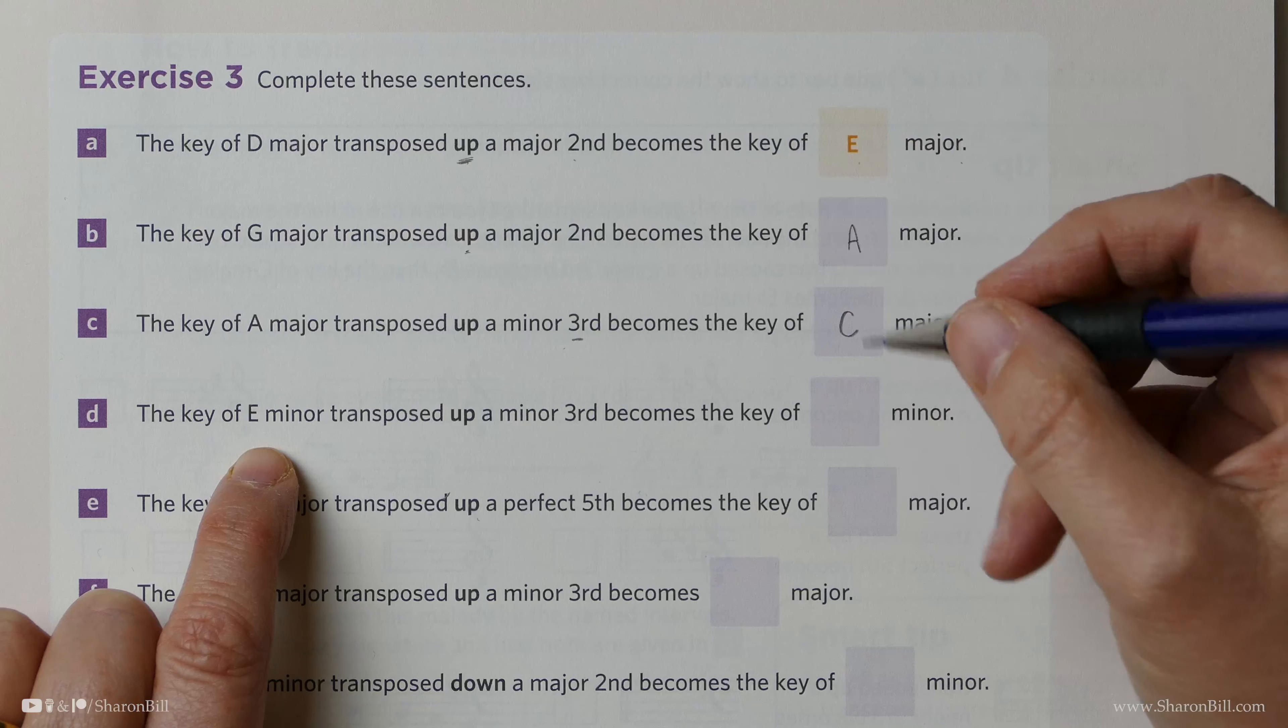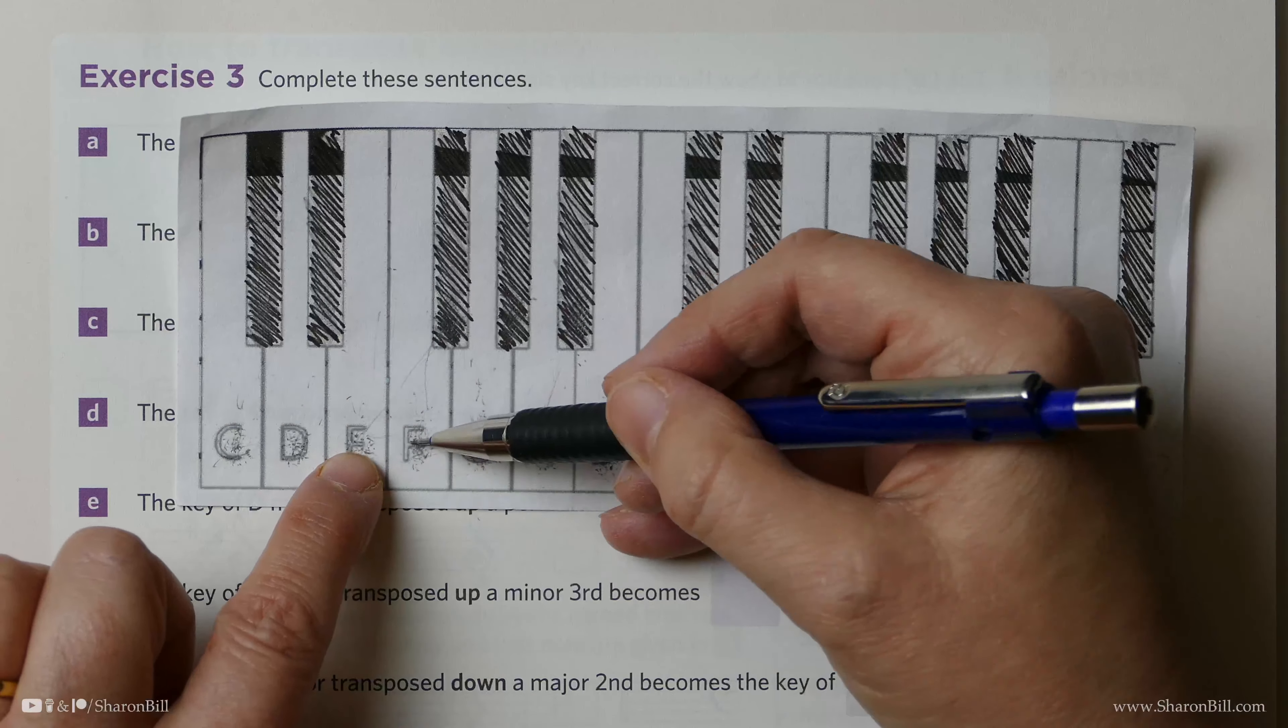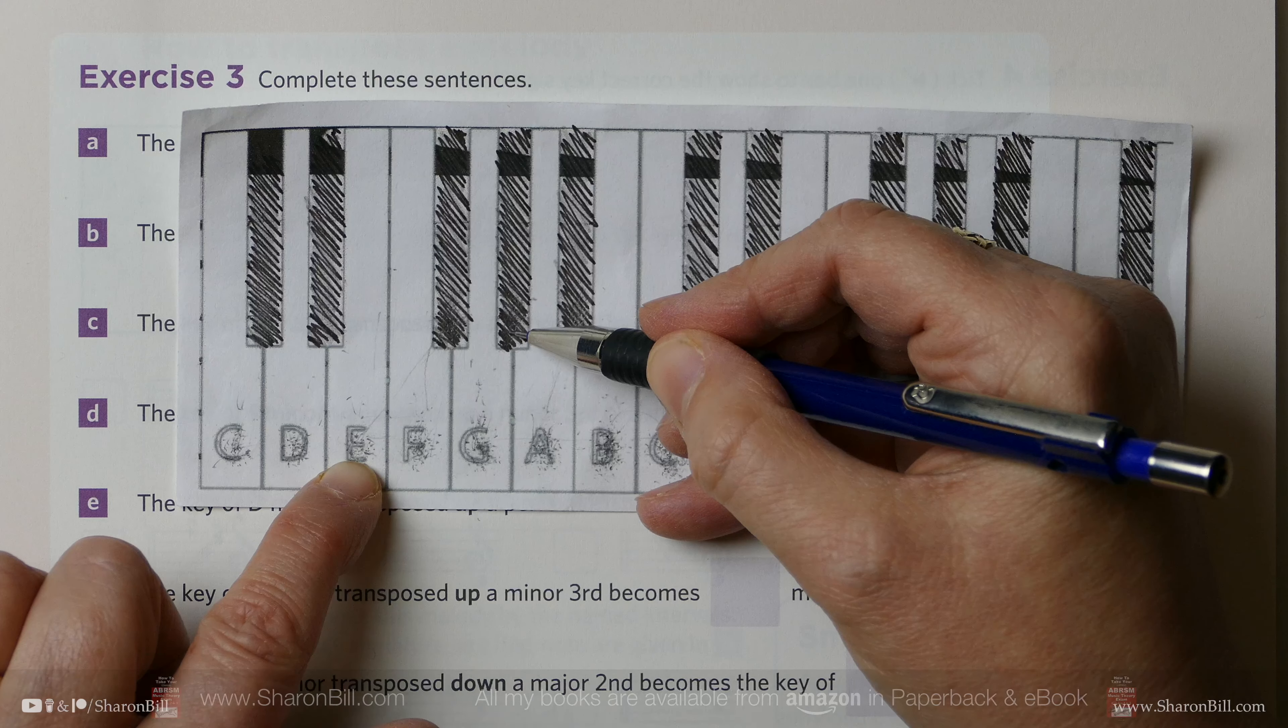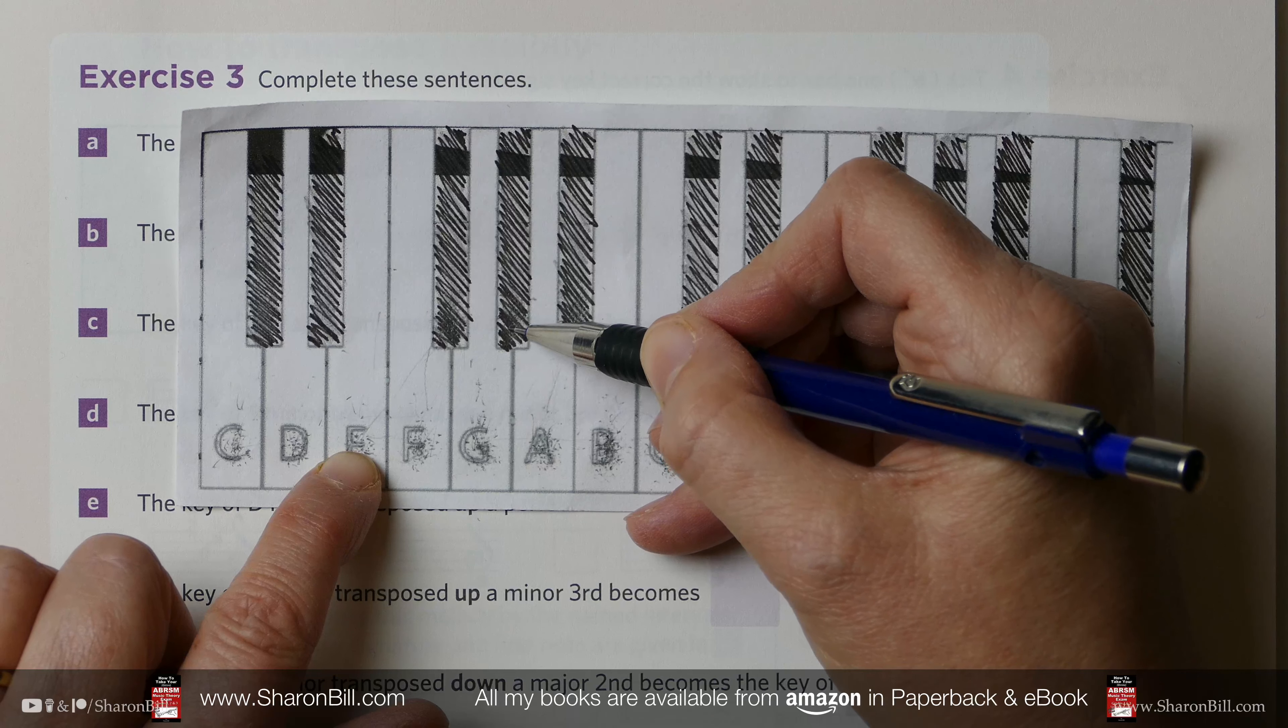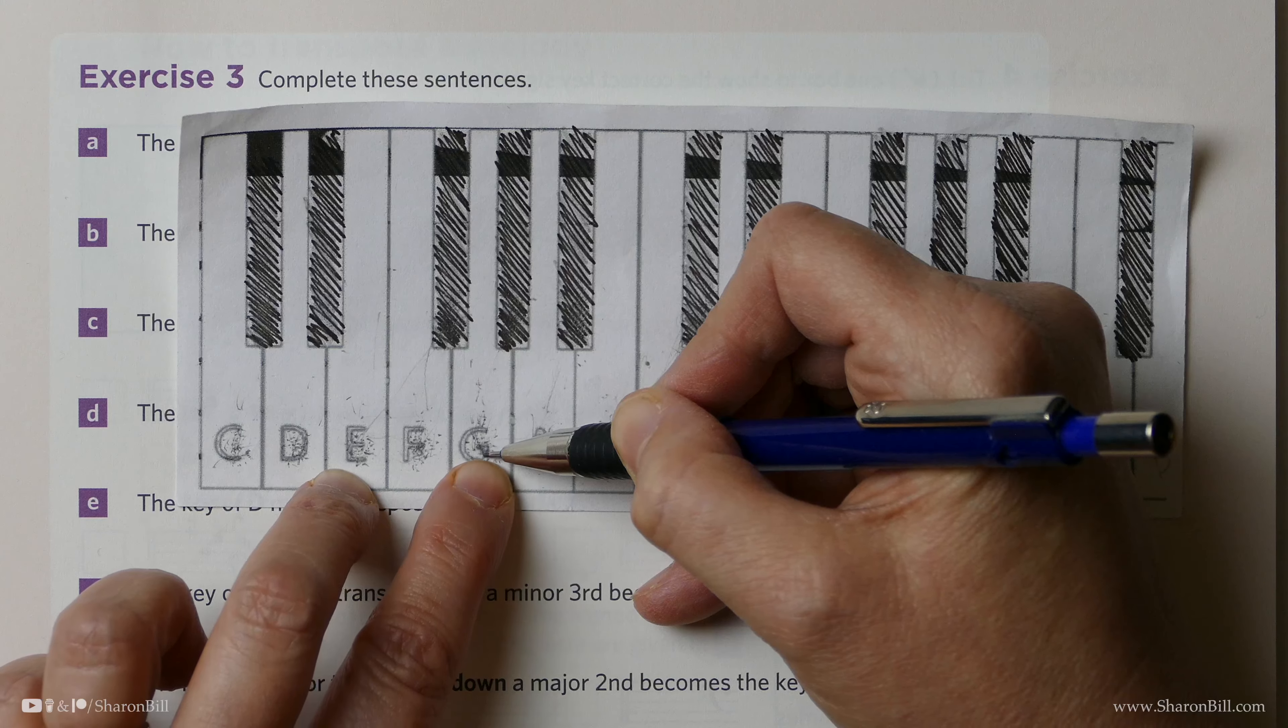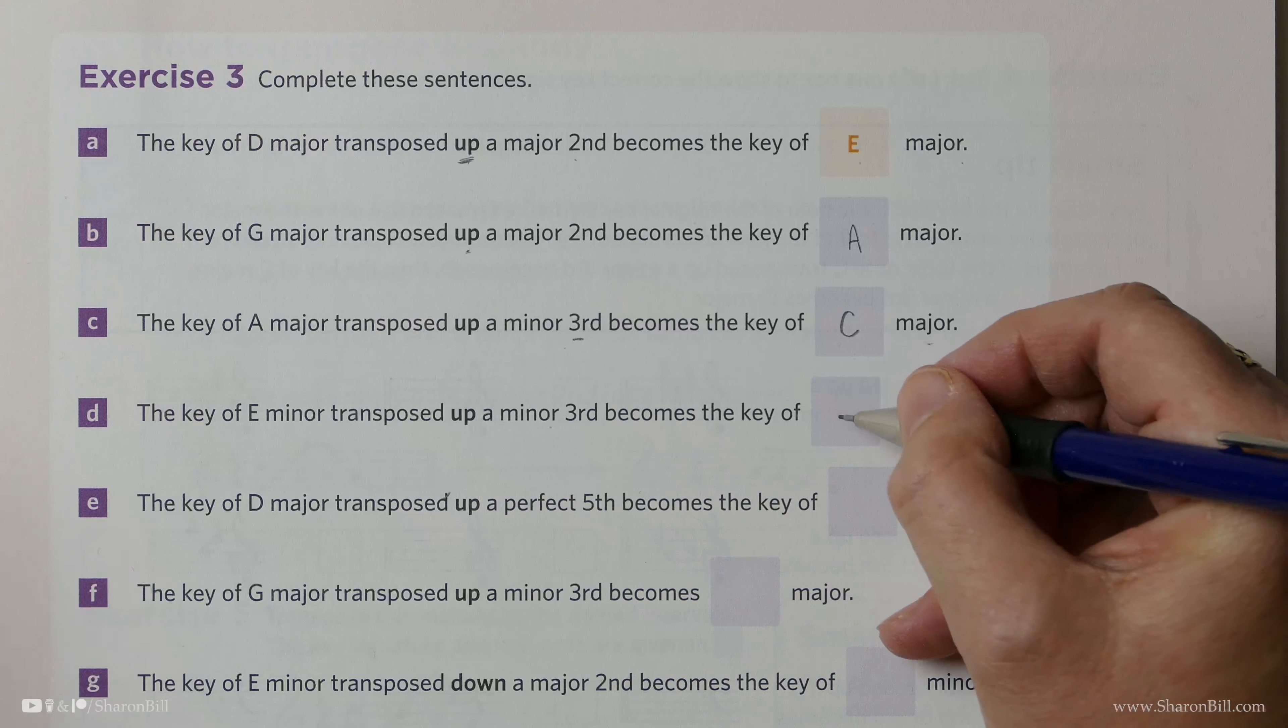And now we're going from the key of E minor to another minor key, going up a minor 3rd. And so E, up a 3rd, 1, 2, 3, takes us to G. Now E major would be G sharp, that would be our major 3rd, minor 3rd is lesser. We know that because E major has a key signature of F, C, G sharps and D sharps. We don't want a major 3rd, we want a minor 3rd, we drop down a semitone, and E minor has G naturals. And that's a smaller interval, a semitone smaller, we drop down a step, that's our minor 3rd interval. So E, up a minor 3rd, takes us to G minor.